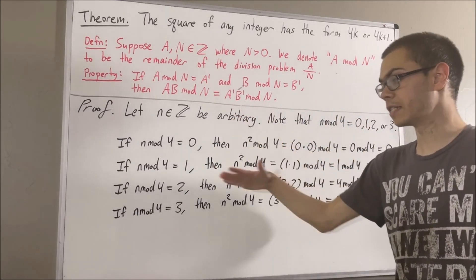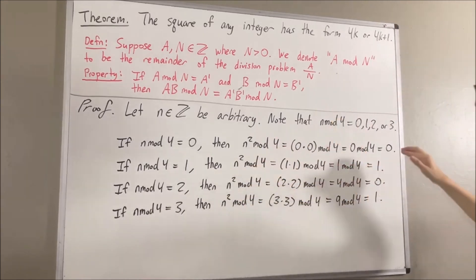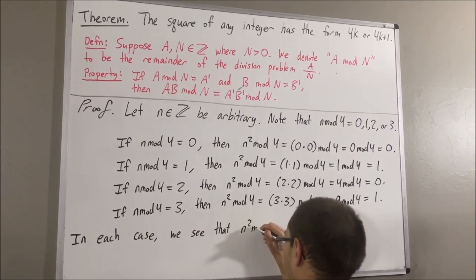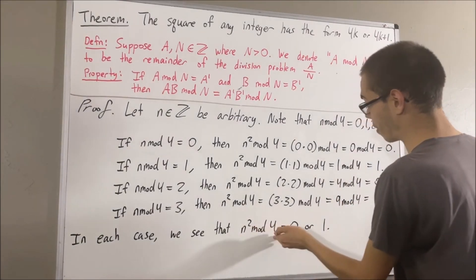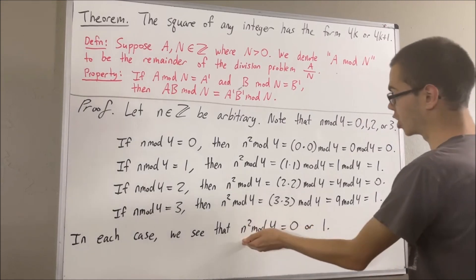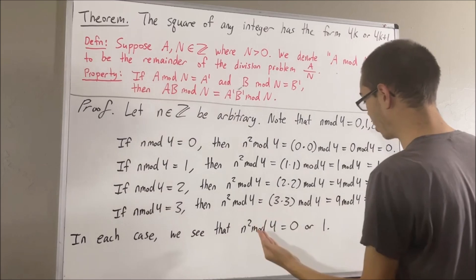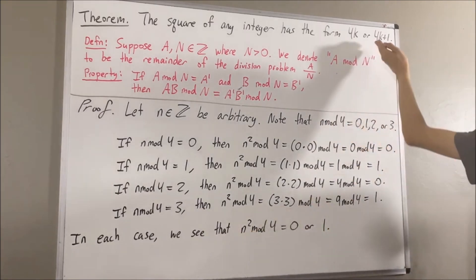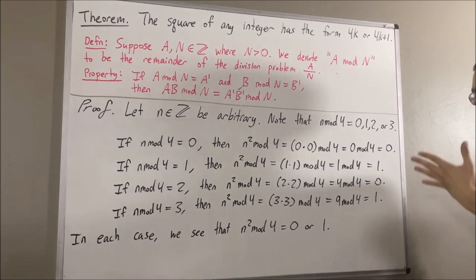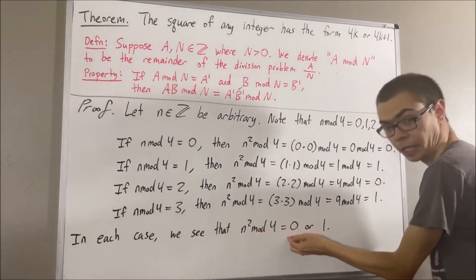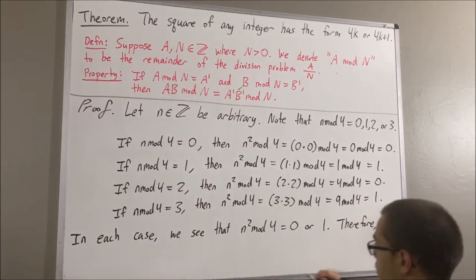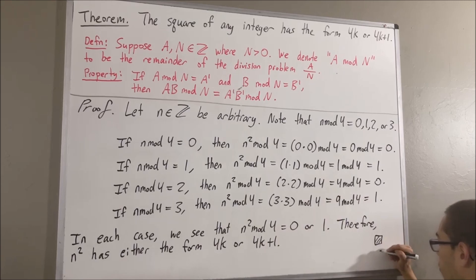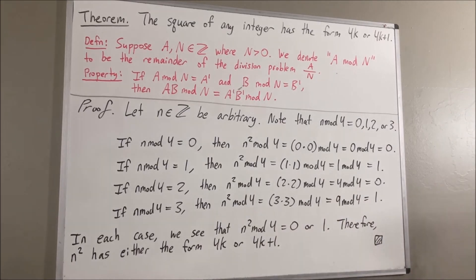In all four cases, we see that n squared mod 4 is equal to either 0 or 1. If the remainder of n squared divided by 4 is 0, then n squared must have the form 4k. If the remainder is 1, then n squared must have the form 4k plus 1. So this tells us that n squared has either the form 4k or 4k plus 1, and this completes the proof.